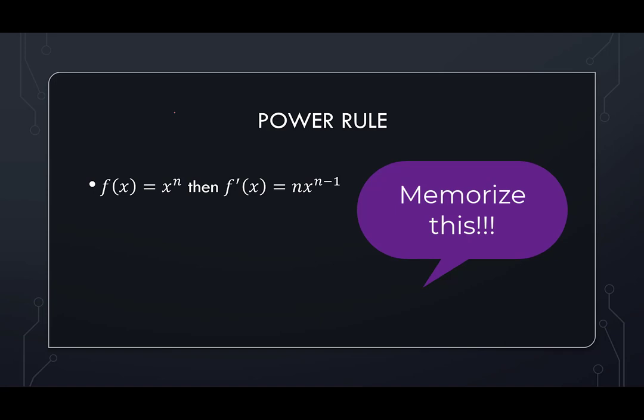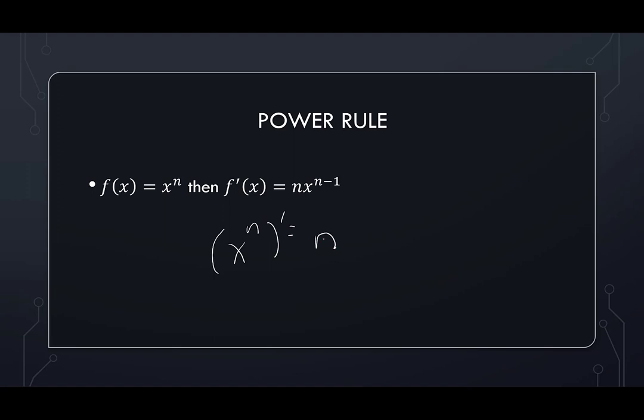When we take the derivative, f prime of x, we get n times x to the n minus 1. So what we're saying here is I had x to the n. When I take the derivative, the n is going to come down. Once the n comes down, I still have x, but I have a new power of n minus 1. So I kind of feel like it's circular that the n came down, it comes down, and then I subtract 1. So you want to get used to this rule, it's going to be super helpful.